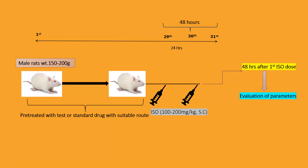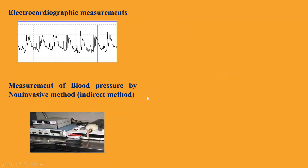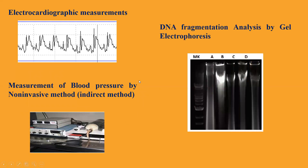There is a range of parameters depending on the requirement; the author can target particular parameters based on the drug category. Some important parameters include: first, electrocardiographic measurements — one has to monitor ECG changes in the rat. Measurement of blood pressure is also very important; it is advised to take blood pressure monitoring by an indirect method using the tail cuff apparatus. DNA fragmentation analysis can also be done to check apoptosis or necrosis, differentiating between them using gel electrophoresis.